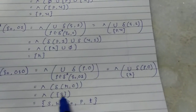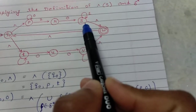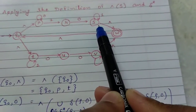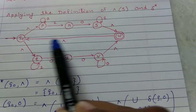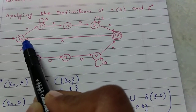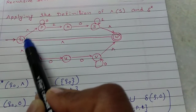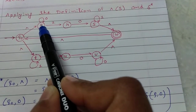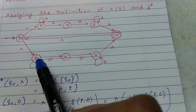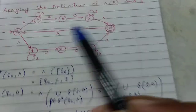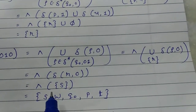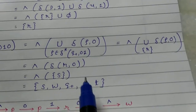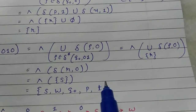First put S itself. Then using epsilon transitions from S you reach W. From W via epsilon you reach Q0. From Q0 via epsilon you reach P, and from Q0 via epsilon you also reach T. So epsilon closure of S is {S, W, Q0, P, T}, and therefore delta star of Q0 on input 010 is {S, W, Q0, P, T}.